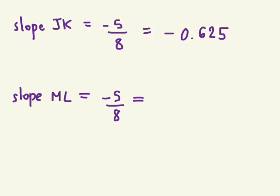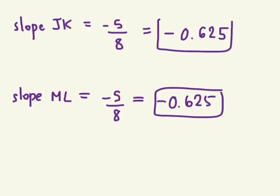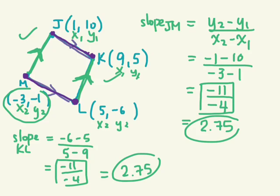Negative 5 over 8, which is negative 0.625. So both slopes of the opposing sides are equal, which means that these two sides are parallel.